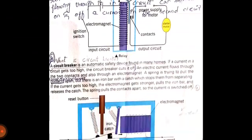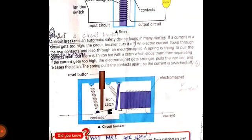The circuit breaker is an automatic safety device found in many homes. It acts as a safety device. If a current in a circuit gets too high, the circuit breaker cuts it off.